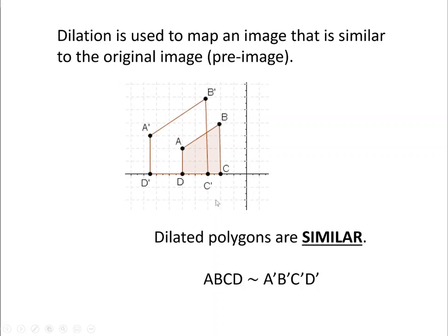Dilated polygons are similar. What's the definition of similar? Similar means that the angles are the same measurement. So angle C here is the same measurement of angle C here, but the sides are proportional. And again, the notation for similarity is one squiggle line. So polygon ABCD is similar to polygon A'B'C'D'.